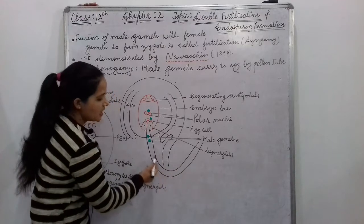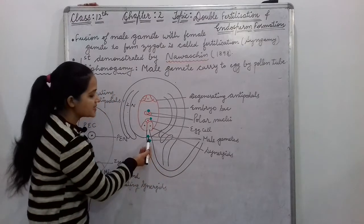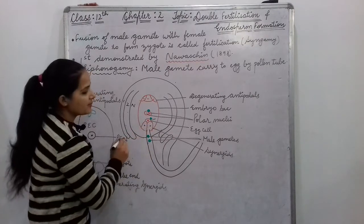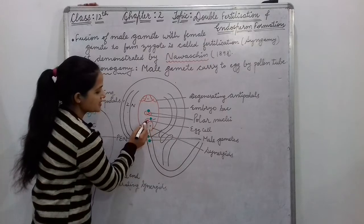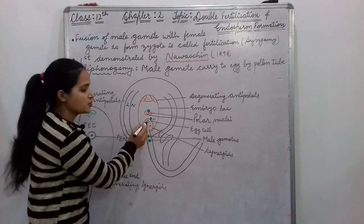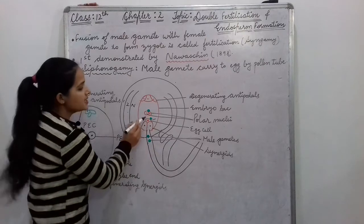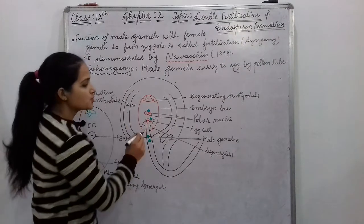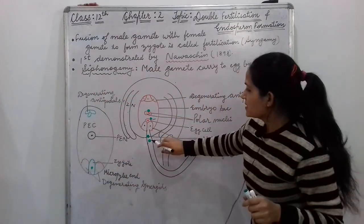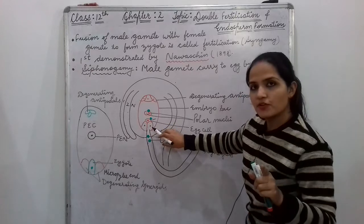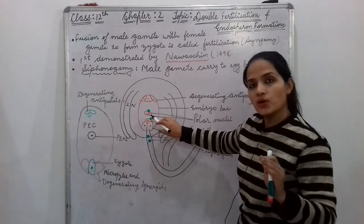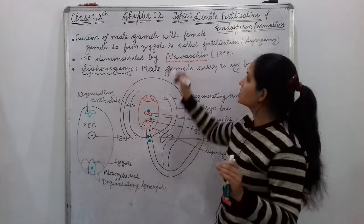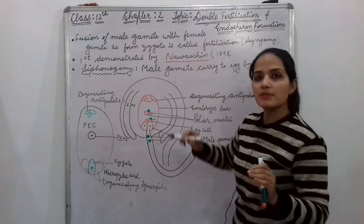After pollen-pistil interaction, the pollen tube carries two male gametes. One male gamete goes to the female gamete or egg cell and fuses with it. The second male gamete goes to the polar nuclei and fuses with it. So two male gametes are there: one goes to the egg cell for fusion, the second goes to the polar nuclei for fusion. Two fusions take place, two fertilizations take place — that is why the term double fertilization is given.